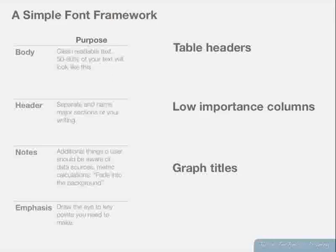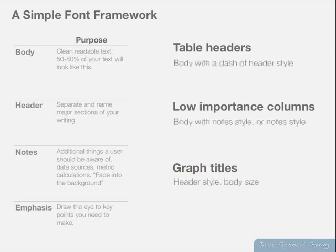There are some things that don't fit easily into one category or another — like table headers, or low-importance columns in a table, or graph titles. For these, what we do is use a combination of the four styles. Table headers are body with just a little bit of the header style. Low-importance columns are the body with the note style, or just in the note style. Graph titles might be the header style with the body size.